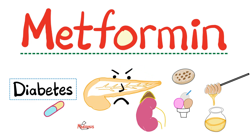Welcome back to my endocrinology playlist. In previous videos, we talked about the embryology and anatomy of endocrine glands. We talked about growth hormone, prolactin, cortisol, estrogens, progesterone, testosterone, aldosterone, antidiuretic hormone, oxytocin, FSH, LH, TSH, thyroid hormone, parathyroid hormone, and all of this lovely stuff. Today, it's time to talk about one of the medications that can help us manage diabetes mellitus, which is a disease characterized by impaired glucose metabolism.